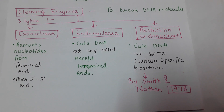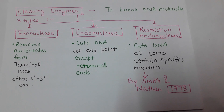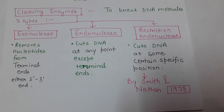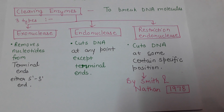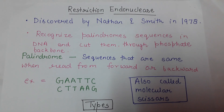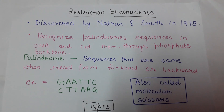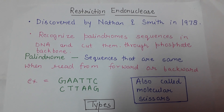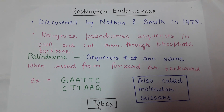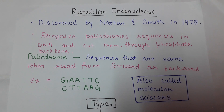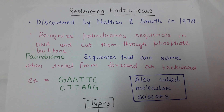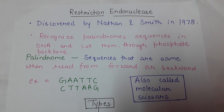Restriction endonuclease enzymes cut DNA fragments at specific positions. They were discovered by Smith and Nathans in 1978. These enzymes are basically called molecular scissors, as they are used in fragmenting DNA at specific positions to form recombinant DNA.